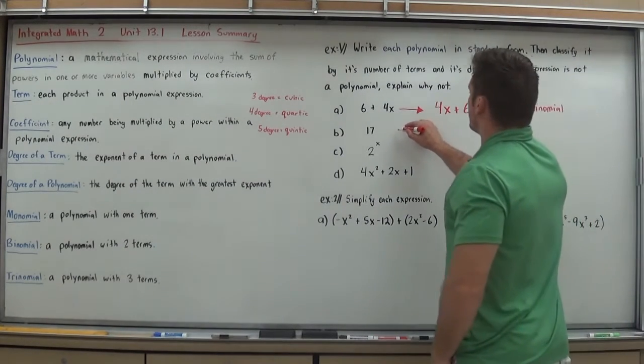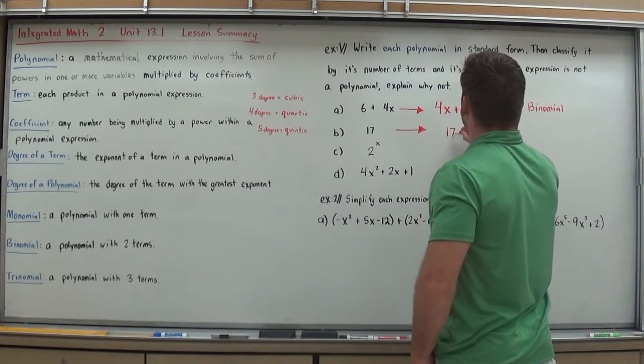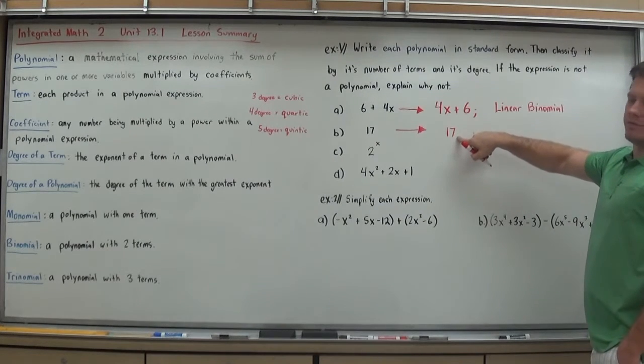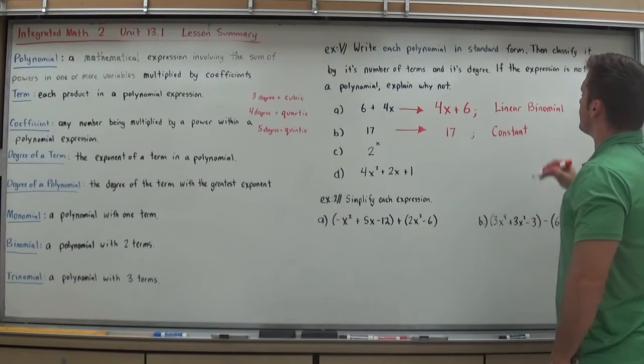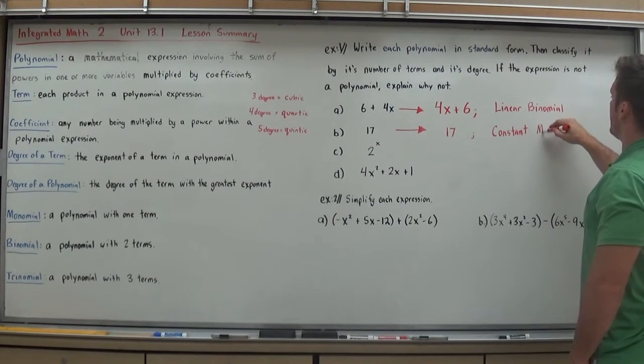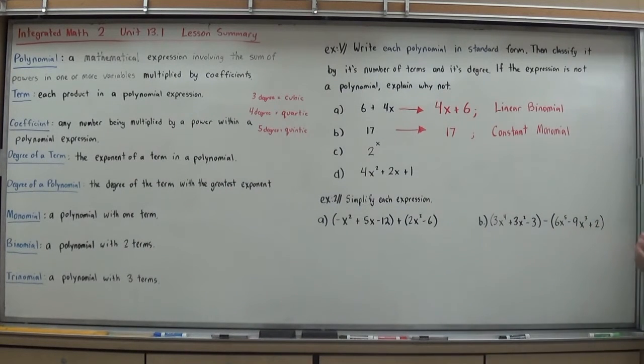Now 17 is only a single term, so it in standard form is just 17. Variable-wise, it doesn't have any. If it doesn't have any variables, it's just called a constant because there's no change in it whatsoever. It stays 17 forever. So that's called a constant, and because it only has one term, it's a monomial. So it's a constant monomial.